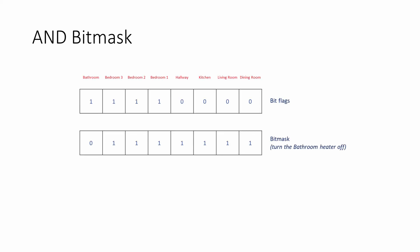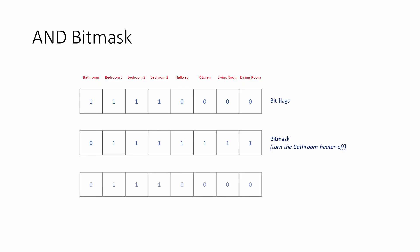In this final example, an AND bit mask is being used to turn off the bathroom heater and leave every other room as it is. Notice this time that the bit mask contains all ones except for a 0 in the bathroom position. When the bit mask is applied using the AND operation, the resulting byte contains the desired new state for each heater. The resulting byte can then be assigned to the bit flags byte, overwriting the existing value.